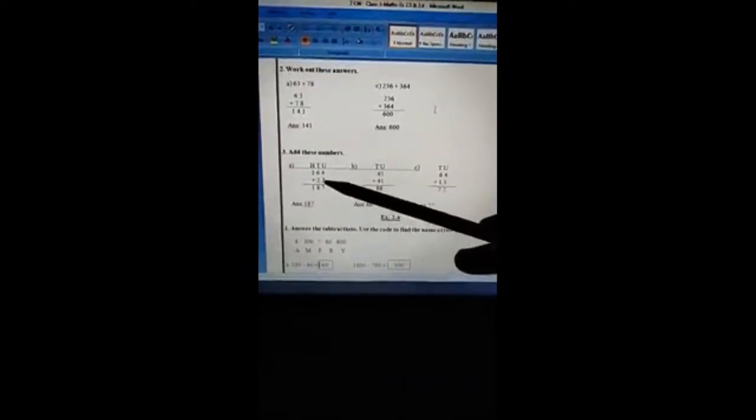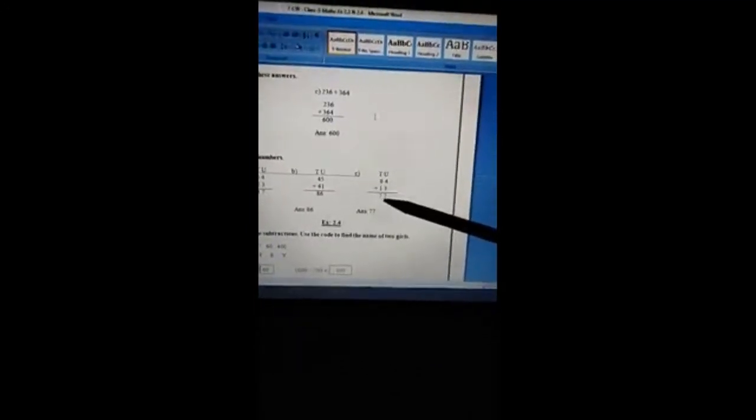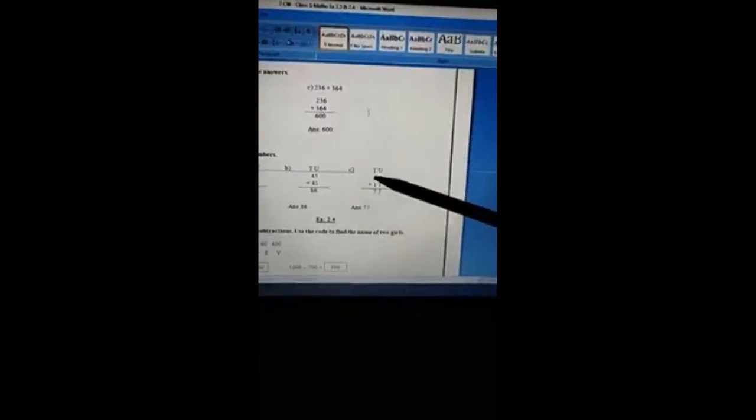Here 164 plus 233: 3 plus 4 is 7, 6 plus 2 is 8, 1 will be 1. 187. 45 plus 41 is 86. After calculating we need to write the answers below. Next, 64 plus 13: 4 plus 3 is 7, 6 plus 1 is 7. 77 is the answer.